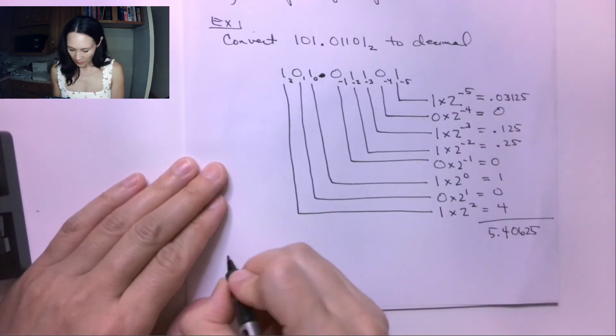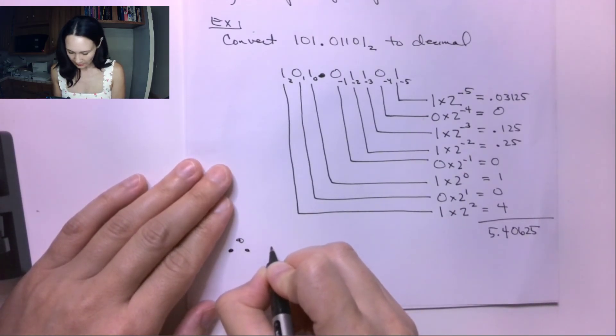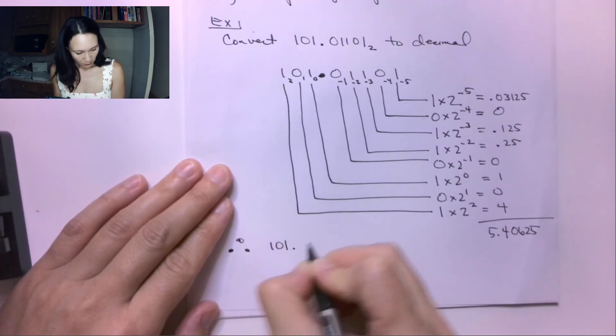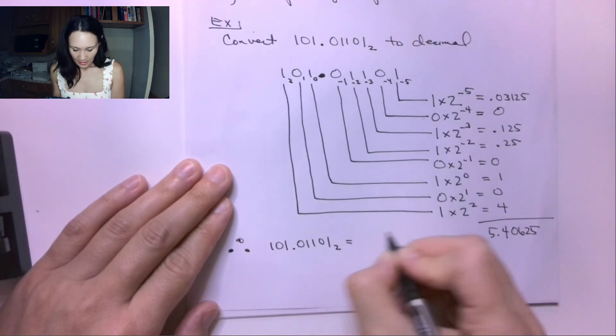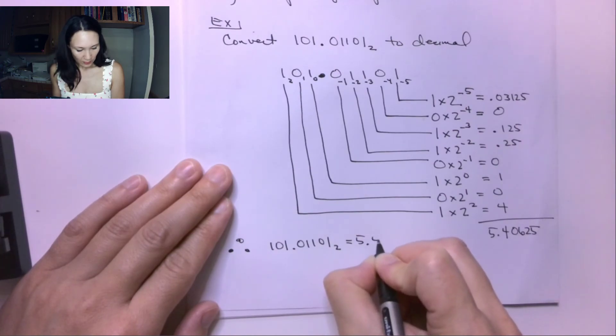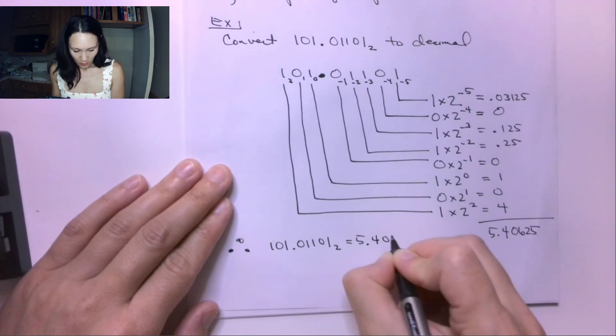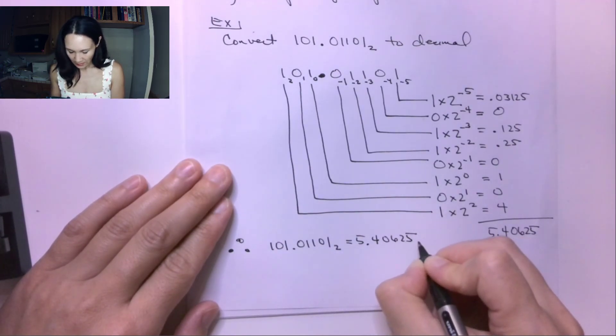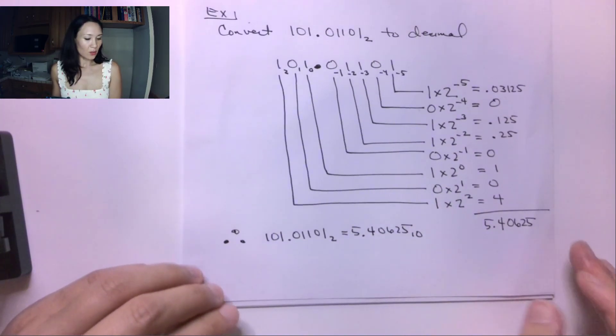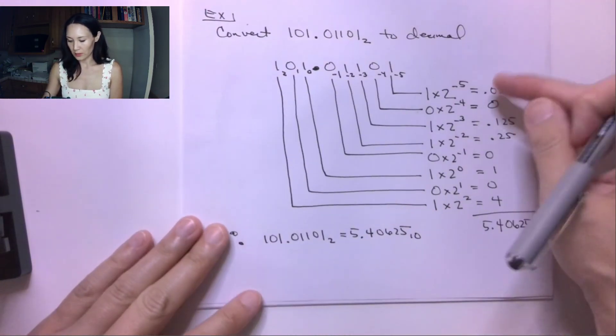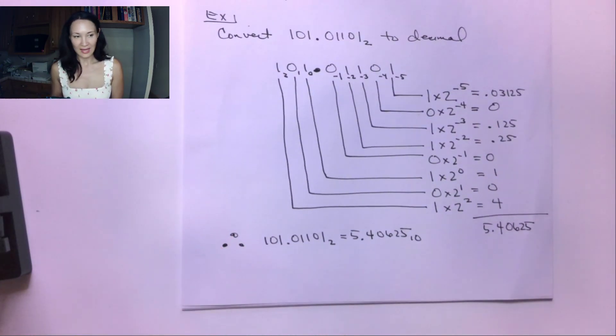Therefore, my conversion is 101.01101 in binary is equivalent to 5.40625 in decimal. At this point, if you want, you can go to one of those online converters and check your work once you've done this yourself by hand.